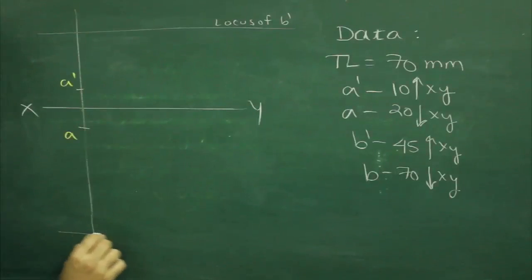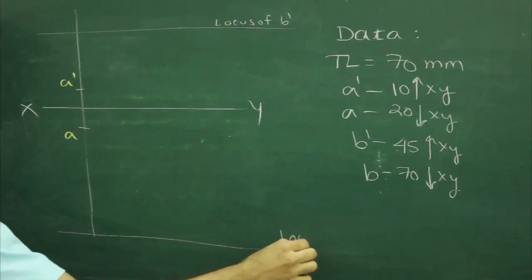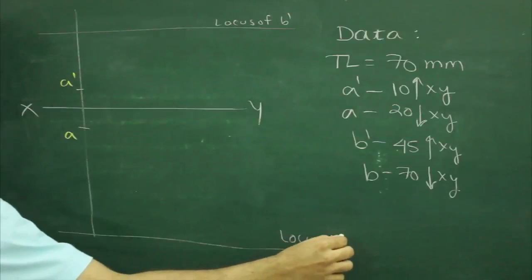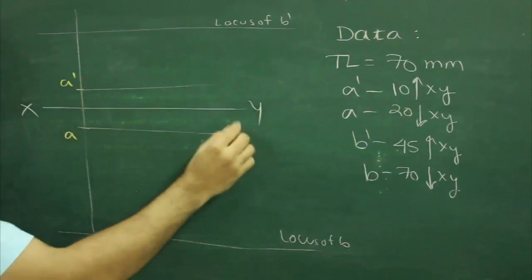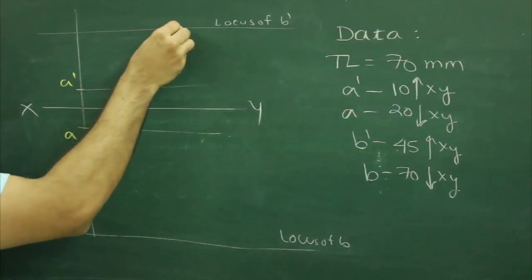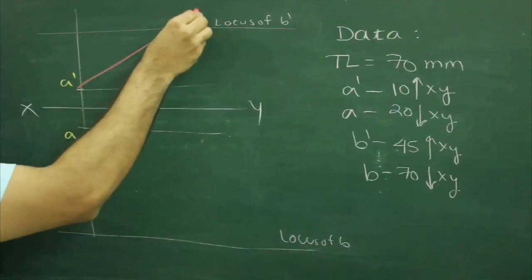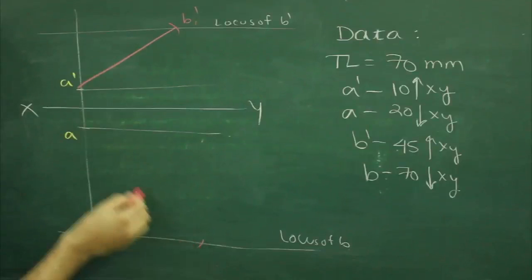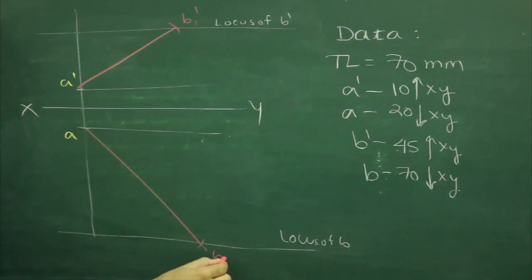From here I will go down by 70 and I will draw locus of B. After that we have true length. From A dash I will cut 70 up, that would be B dash, and from A I will cut 70 down, that would be B2.